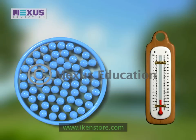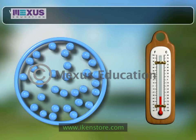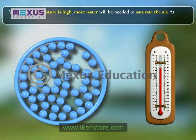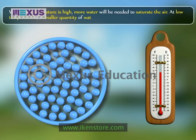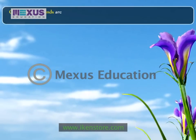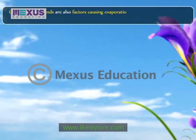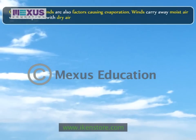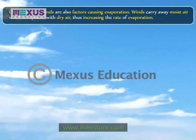The capacity of air to hold water is related to the temperature. When the temperature is high, more water will be needed to saturate the air. At low temperatures, a smaller quantity of water would be enough to saturate the air. The temperature at which the air gets saturated is known as the dew point. Clear skies and winds are also factors causing evaporation. Winds carry away moist air, which is replaced with dry air, thus increasing the rate of evaporation.